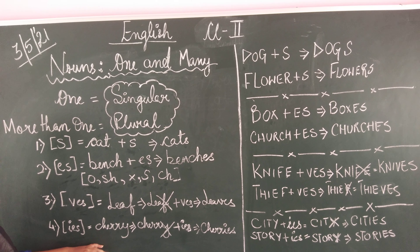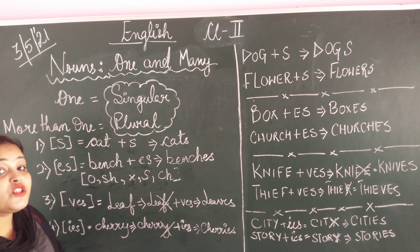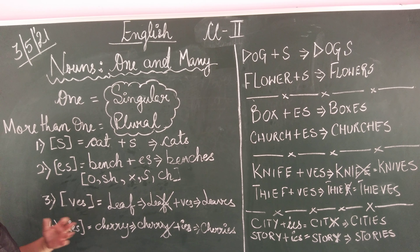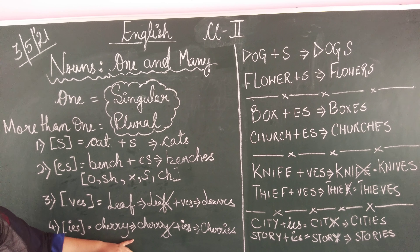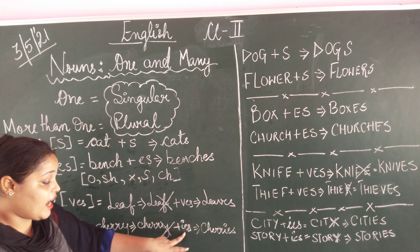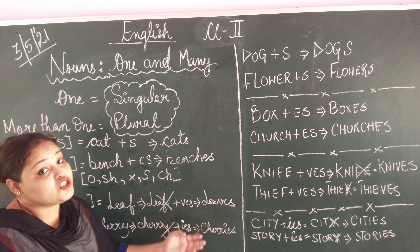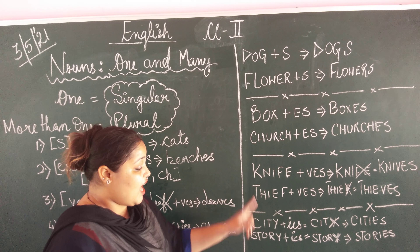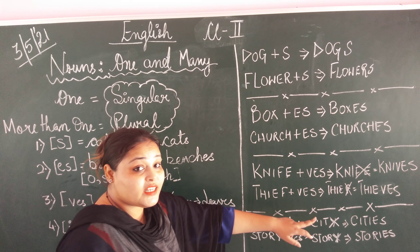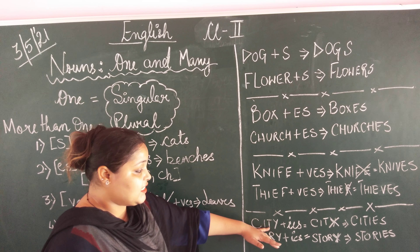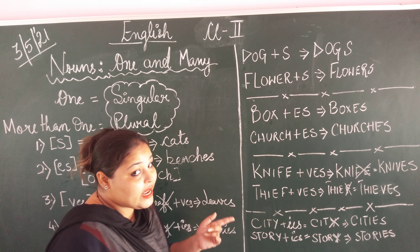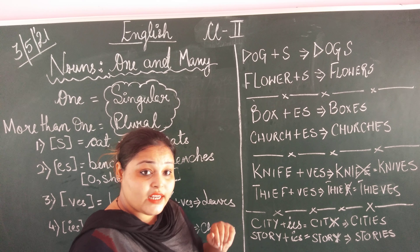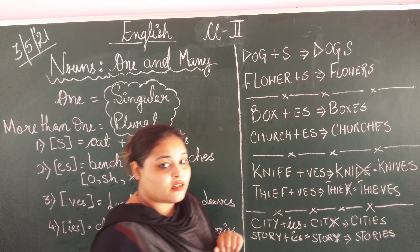Now see the fourth rule: adding IES to words to make them plural. IES is added to those words which have Y at the end. For example, cherry — Y is there, so cancel out Y and add IES: cherries. City — one city, cancel out Y, add IES: cities. Many cities is the plural form. Then, story — cancel Y, add IES: stories.